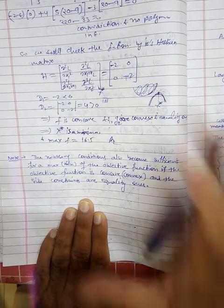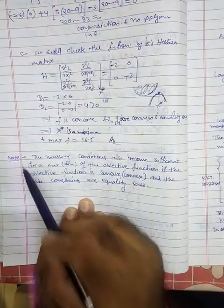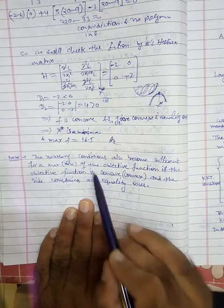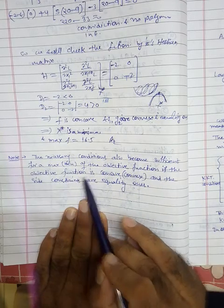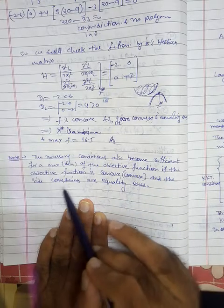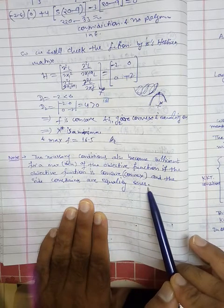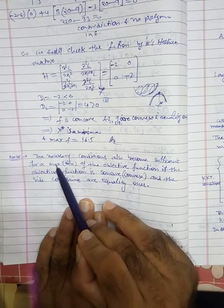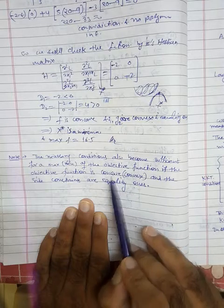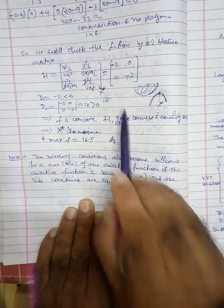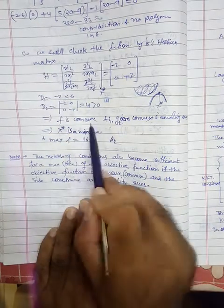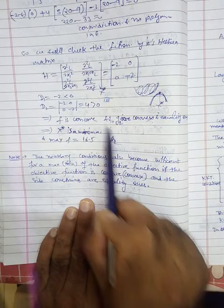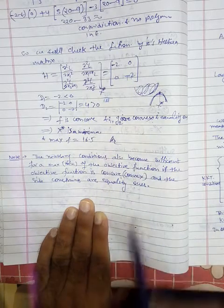An important note: the necessary conditions also become sufficient for a maximum or minimum when the objective function is concave (for maximization) or convex (for minimization) and the side constraints are equality constraints. In this problem the objective was concave and the constraints were linear equalities, so the necessary conditions were sufficient.